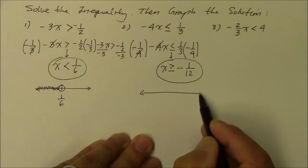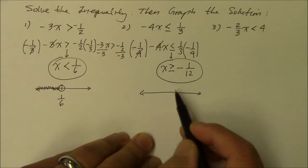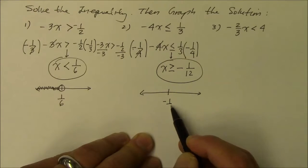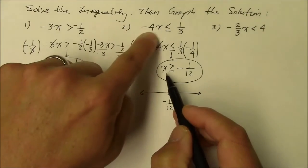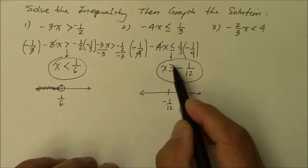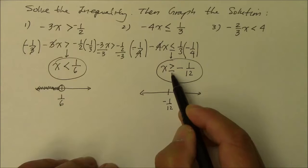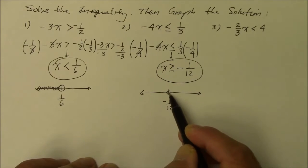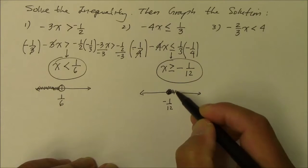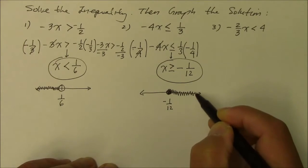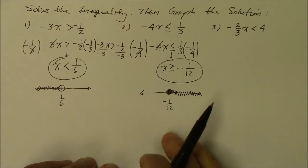Now, how do you draw that on the number line? The number we're talking about is negative 1 over 12. And, it says the number you choose to satisfy this inequality, it has to be greater than or equal to. So, equal to means close circle to include that number. And, greater than means to indicate all the numbers to the right side of that number on the number line. There it is.